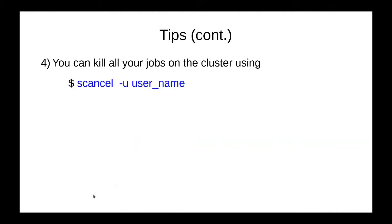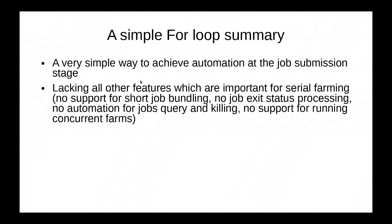In the first few simple examples, only job submission automation is presented. What if you need to kill all your serial farm? If the serial farm is the only thing you're currently running on Graham, you can use 'scancel -u your_username' and that will kill all the jobs you currently have on Graham — both queued and running. So use it very carefully. Here's the summary: it's a very simple way to achieve automation at the job submission stage, but all other desirable serial farming features are missing.